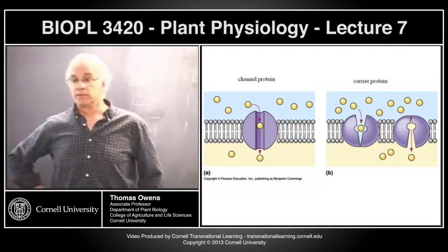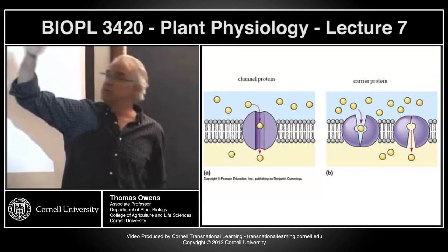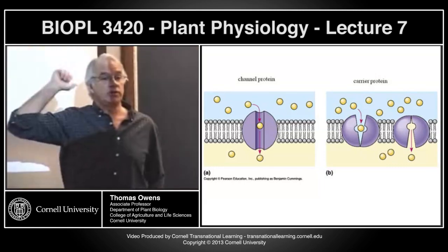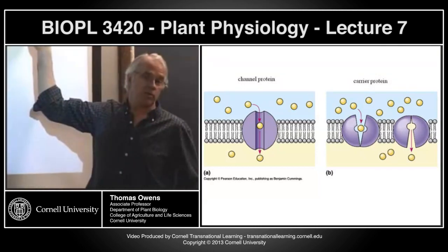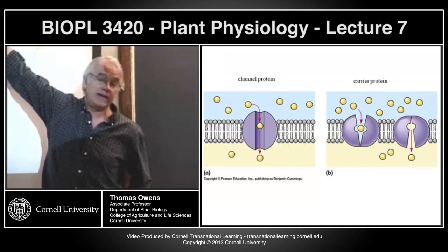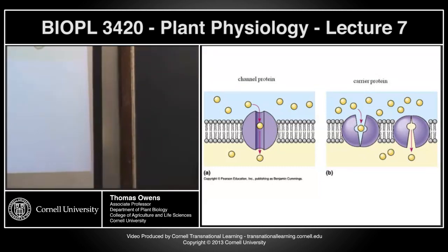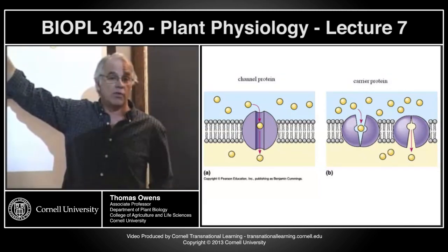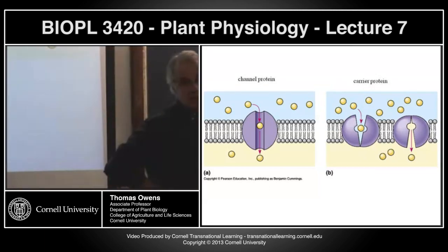Carrier proteins confuse students — think of a carrier protein as being like an enzyme. The carrier protein has two different conformations: one that opens a binding site on the outside of the cell, and one that opens a binding site on the inside. When the substrate — whatever's being carried — binds, it causes the conformation to switch to the opposite state. Both channels and carriers provide low-resistance, hydrophilic pathways for solutes to move across the membrane.